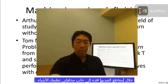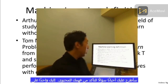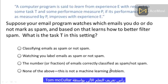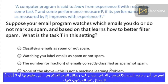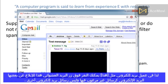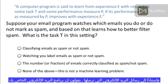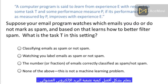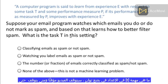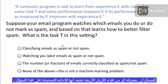Throughout these videos, I'll occasionally ask you a question to make sure you understand the content. On top is the definition of machine learning by Tom Mitchell. Let's say your email program watches which emails you do or do not flag as spam. In an email client like this, you might click the spam button to report some email as spam but not other emails. And based on which emails you mark as spam, your email program learns better how to filter spam email. What is the task T in this setting? The video will pause and you can use your mouse to select one of these four radio buttons to indicate which you think is the right answer.